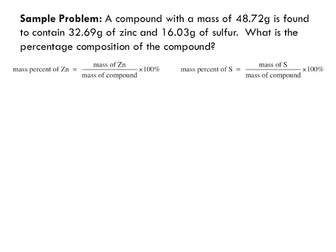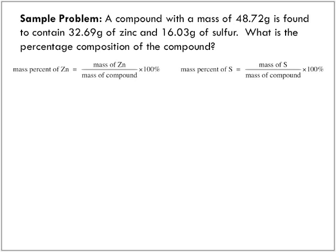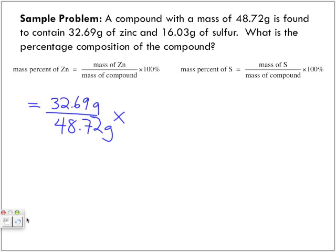Here are the calculations. What is the mass of zinc? 32.69 grams. What's the total mass? 48.72 grams. We divide those two and get a percentage, then multiply by 100 to get it in percent form.